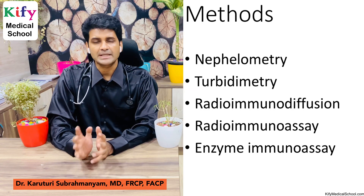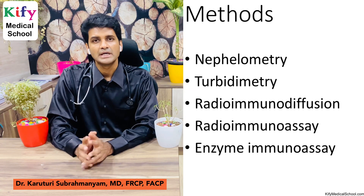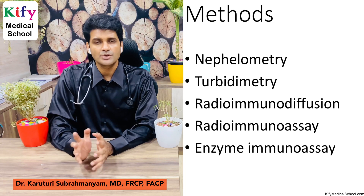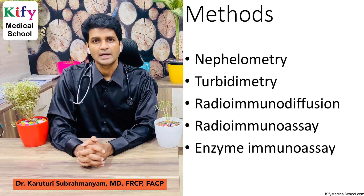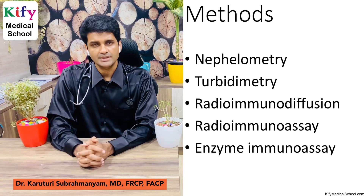The laboratory methods used to measure CRP include nephilometry, turbidimetry, radioimmunodiffusion, radioimmunoassay, and enzyme immunoassay.